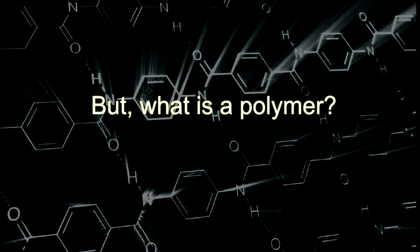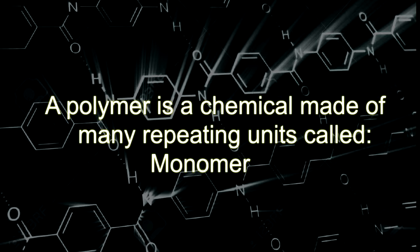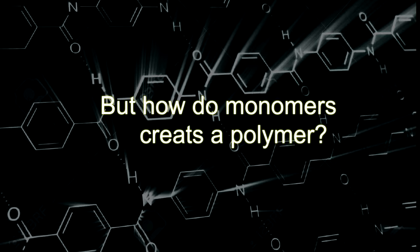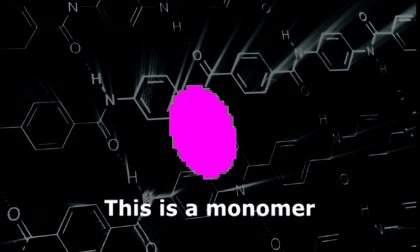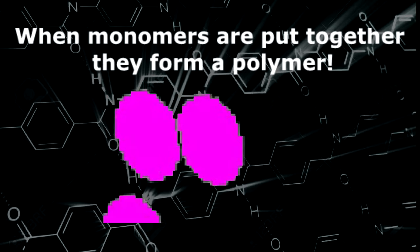Gums are made of a material called polymer. But what is a polymer? A polymer is a chemical made of many repeated units called monomers. But how do monomers create a polymer? Check it out. This is a monomer. When monomers are put together, they form a polymer.